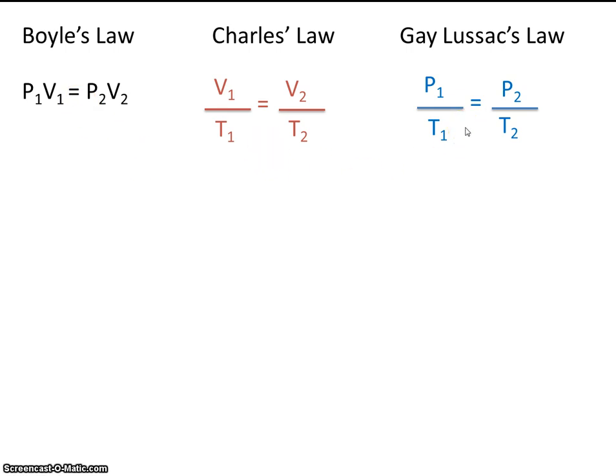As you probably guessed, the combined gas law combines all three of these formulas into one. So we'll take the pressure from Boyle's law, we'll take the volume from Charles' law, and we'll take the temperature from Gay-Lussac's law. This will be our initial conditions, and those will be equal to our final conditions. So P1 times V1 divided by T1 equals P2 times V2 divided by T2, and this is called the combined gas law.